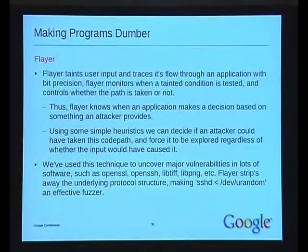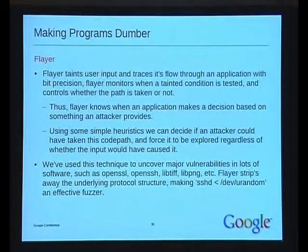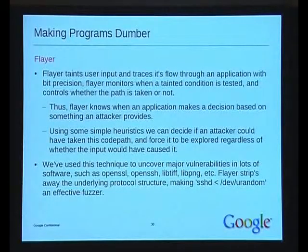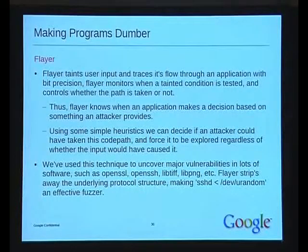So how does Flayer work? It taints the user input and traces its flow through the application with bit-level precision. Flayer monitors when a tainted condition is tested, and it can tell whether the path should be taken or not. Because it's using DBI, you can flip the condition and choose which path to take. Flayer knows when an application is making a decision based on something an attacker provided. We implemented some simple heuristics so we can decide which code path to take, exploring more of the program. We try to reach as much of the program as possible using coverage data.